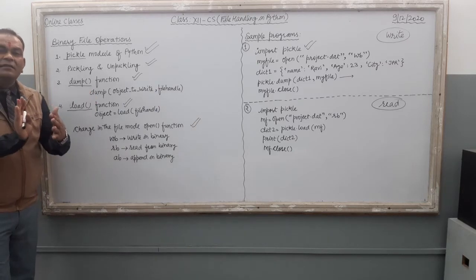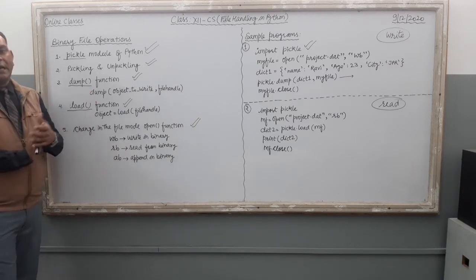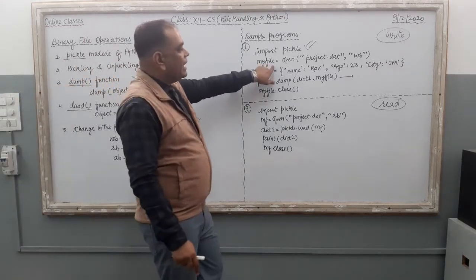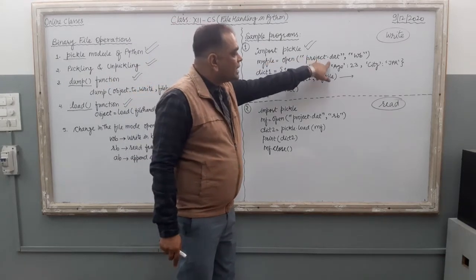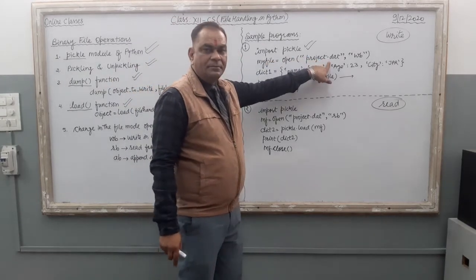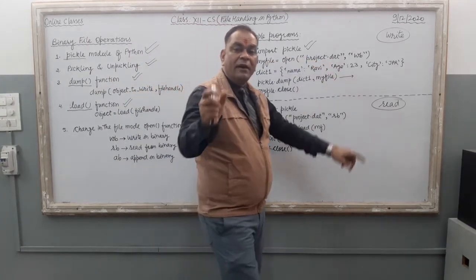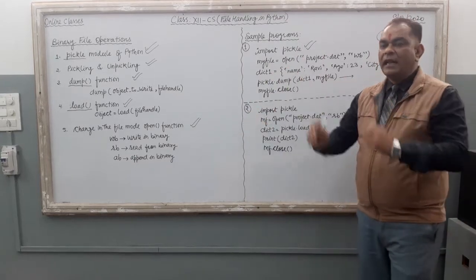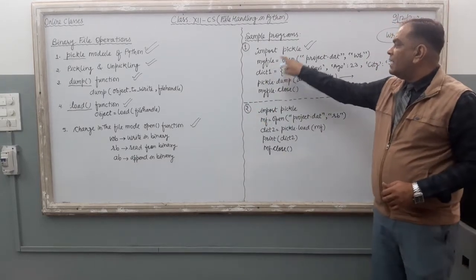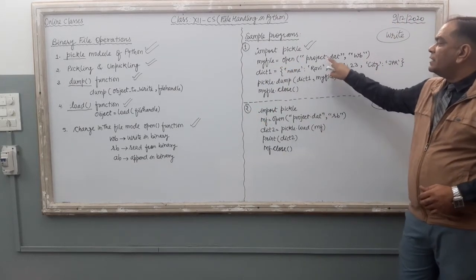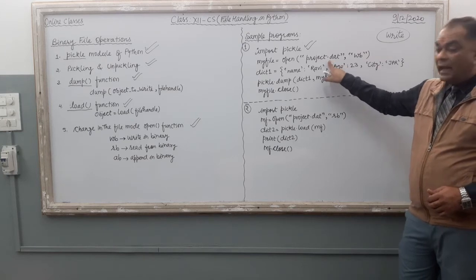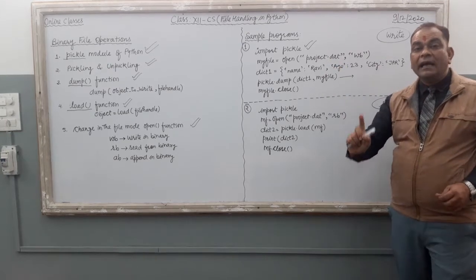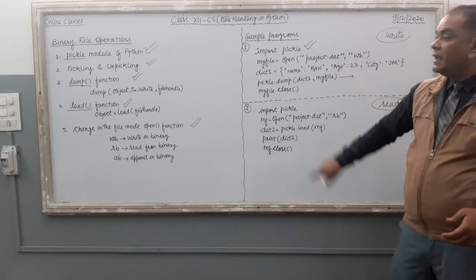For example: my_file = open('project.dat', ...). Here my_file is the file handle, and this file handle is connected with project.dat. This file is located in the root folder of your Python.